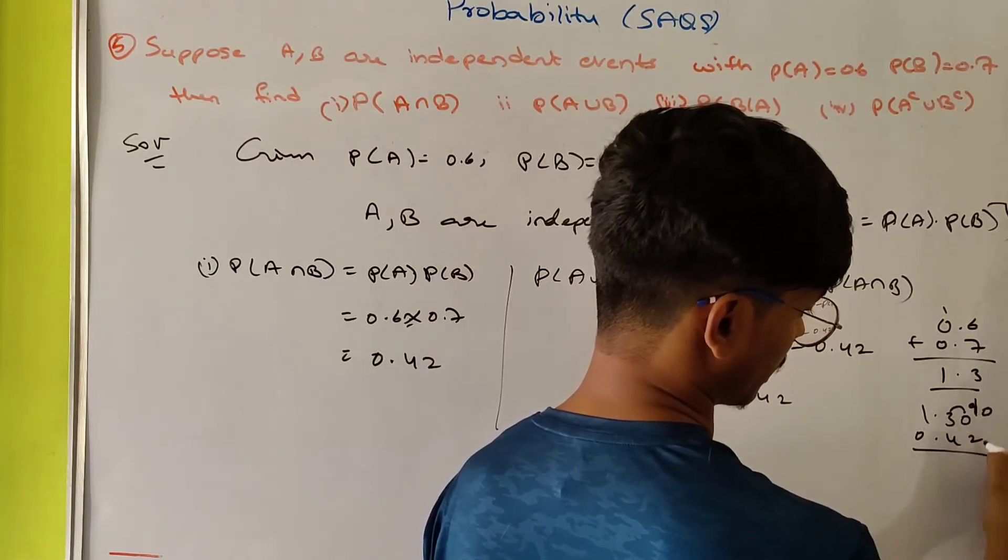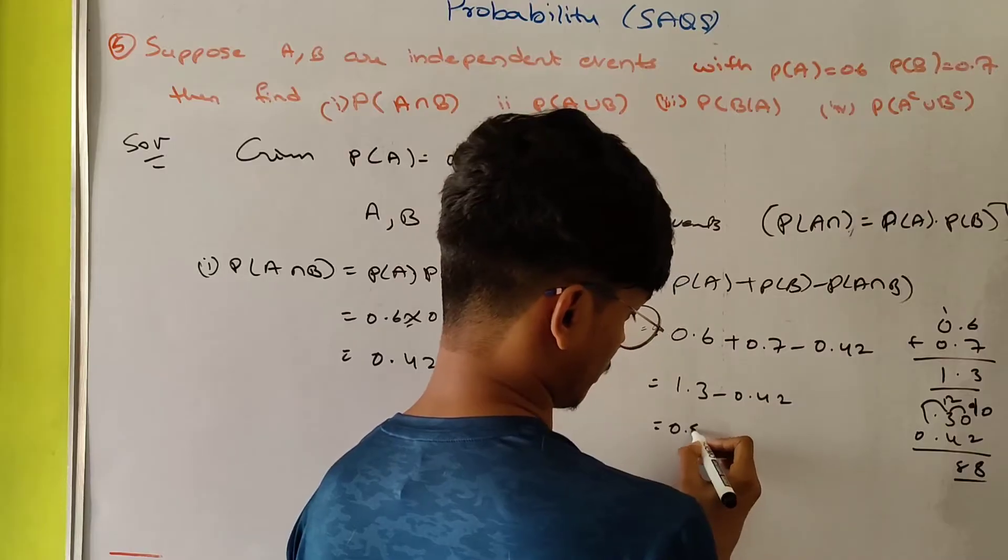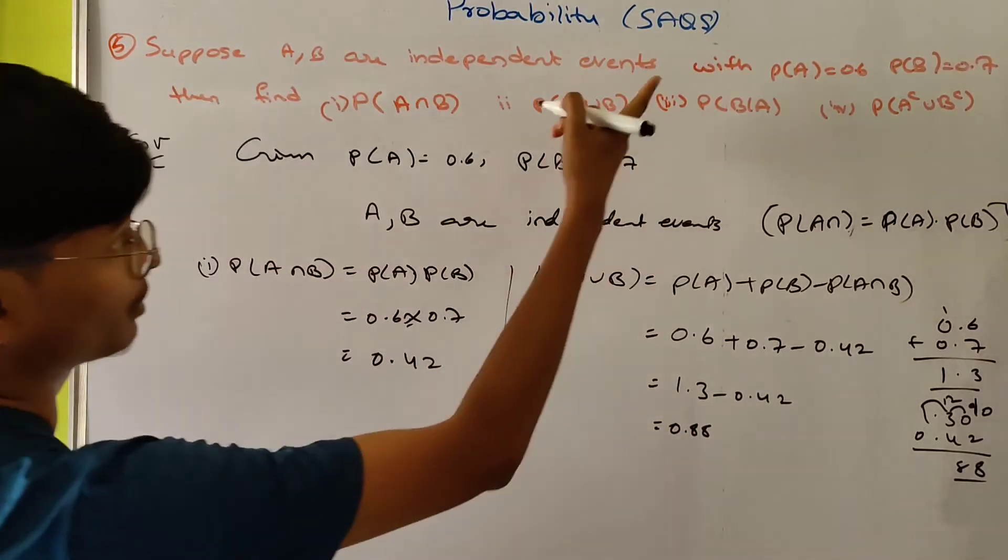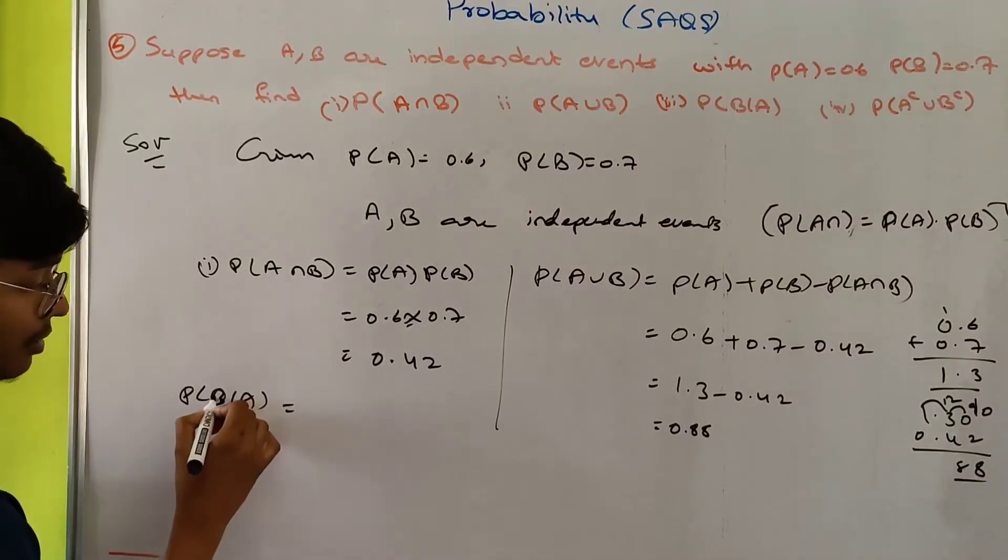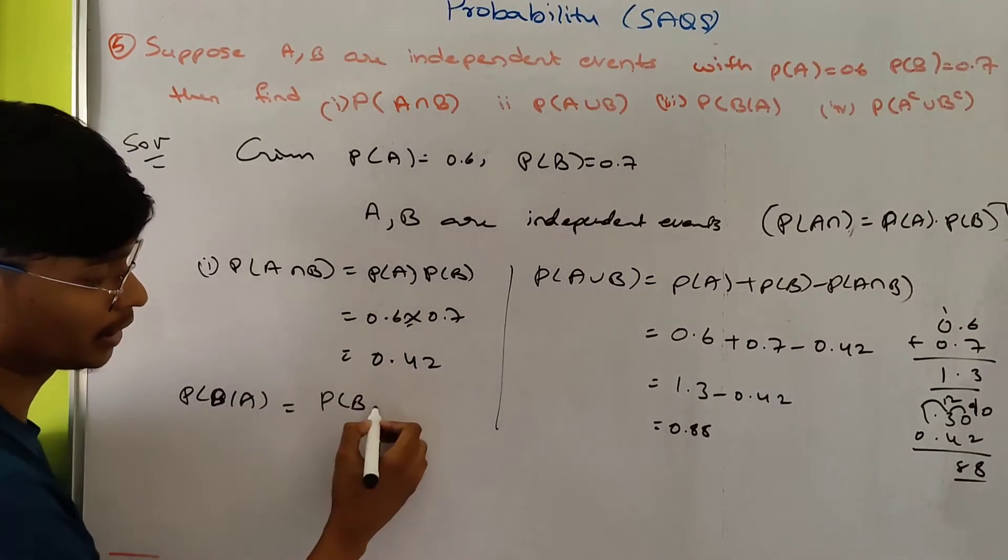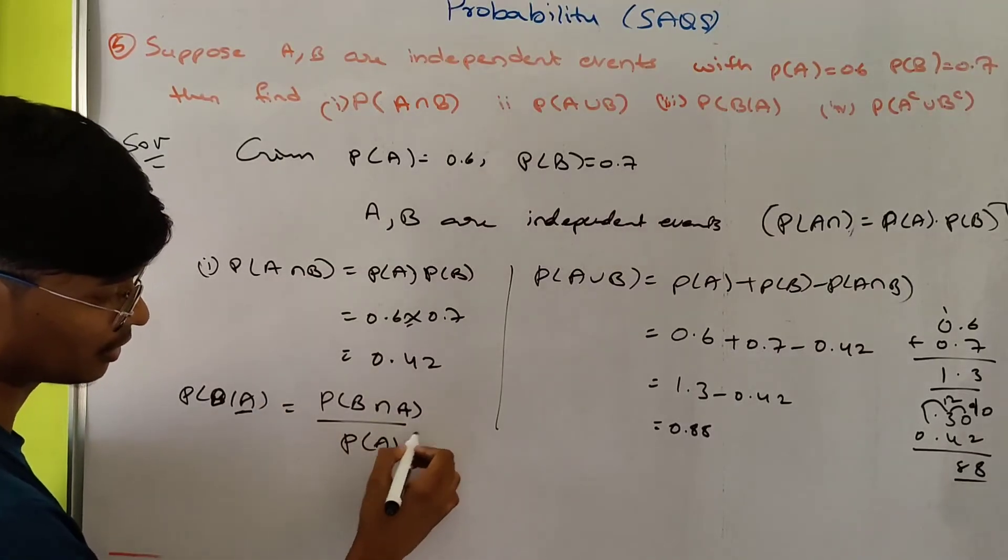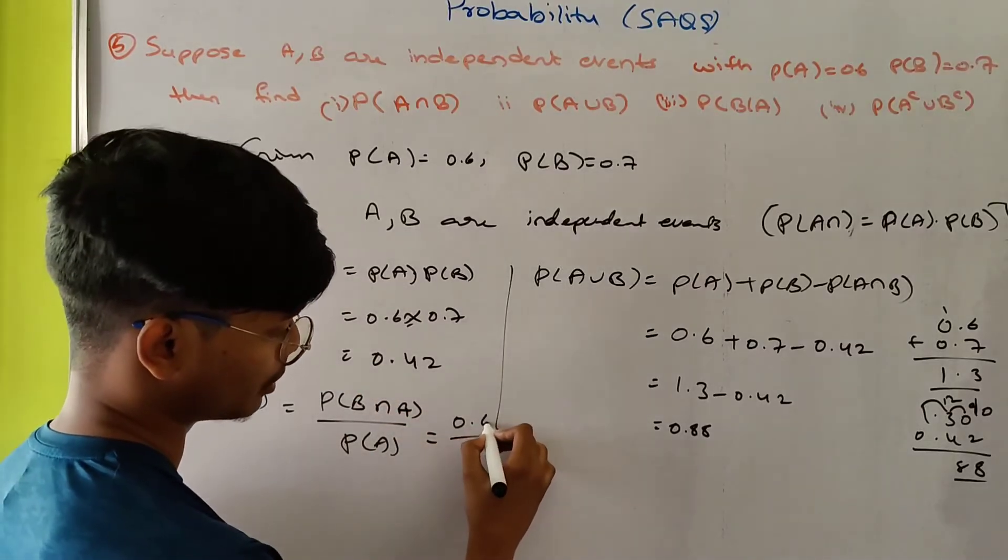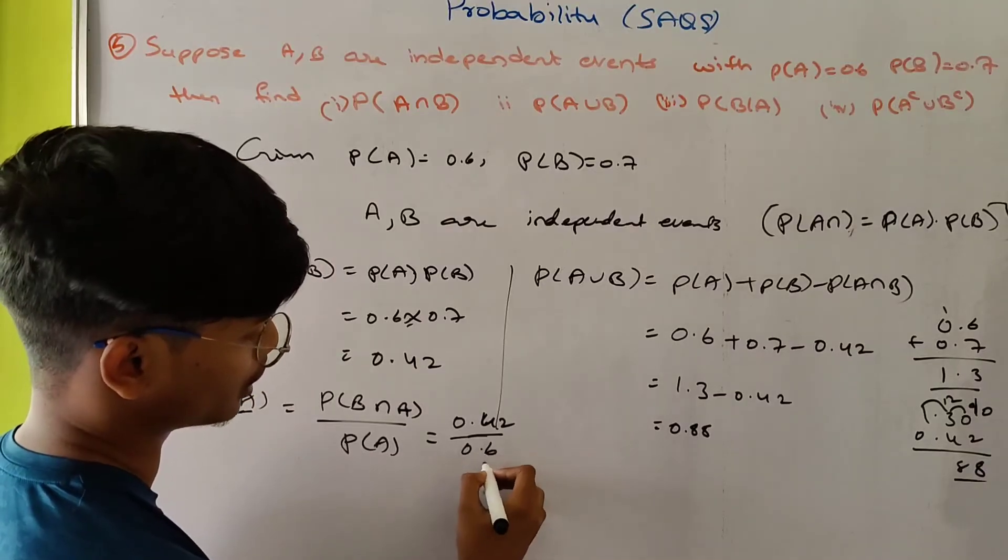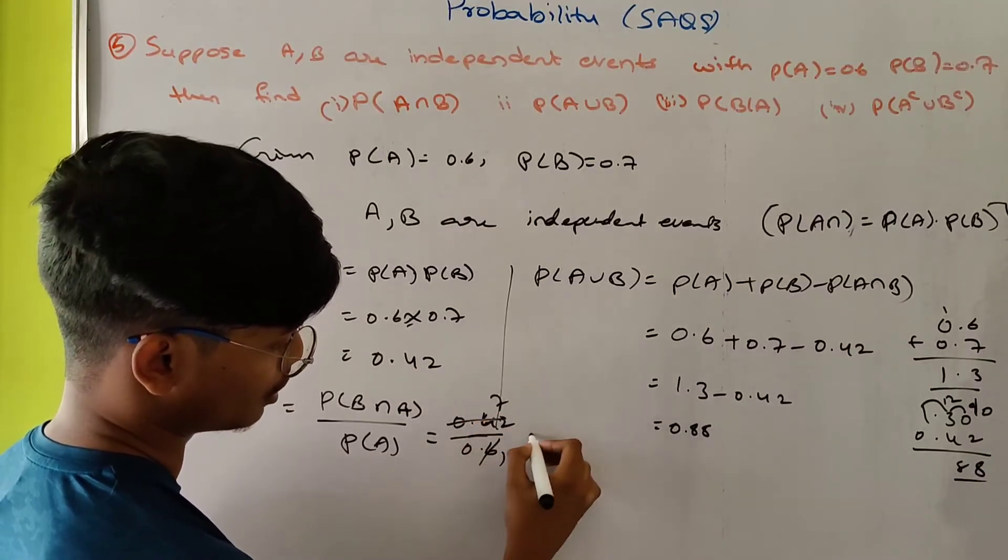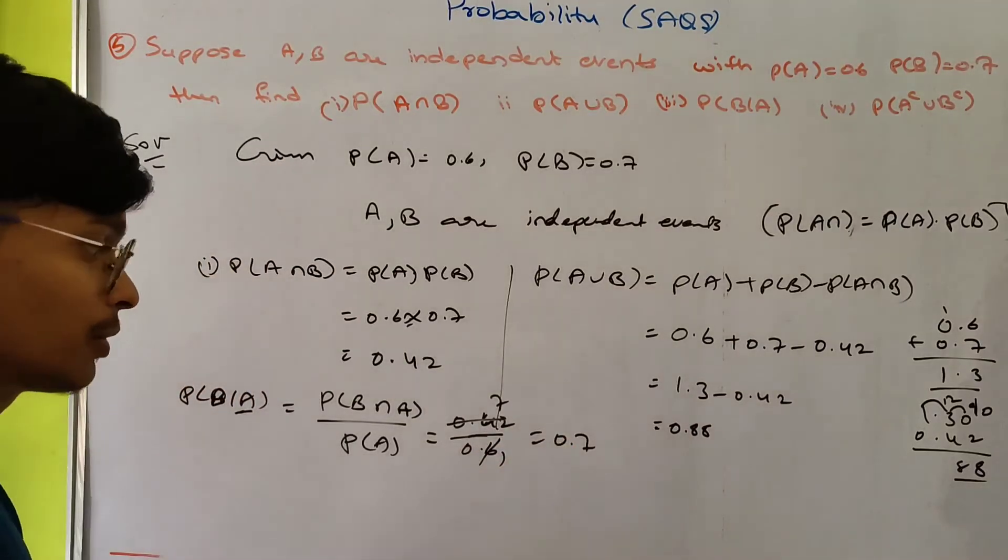Next, P(B|A) - B after A, conditional probability. B intersection A divided by P(A). B intersection A and A intersection B are the same. So 0.42 divided by P(A) is 0.6, which equals 0.7.